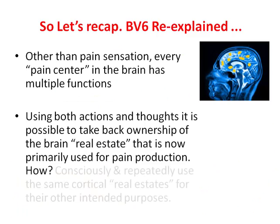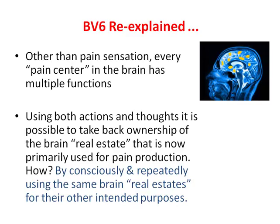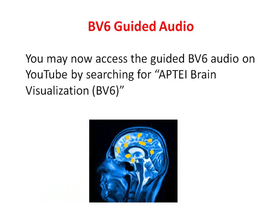So let's recap. BV6 re-explained: other than pain sensation, every pain center in the brain has multiple functions. Using both actions and thoughts, it's possible to take back ownership of the brain real estate that is now primarily used for pain production — by consciously and repeatedly using the same brain real estate for their other intended purposes. You may now access the guided BV6 audio on YouTube by searching for Apti Brain Visualization BV6.